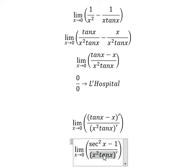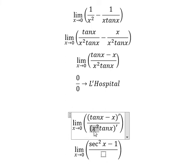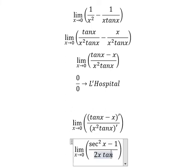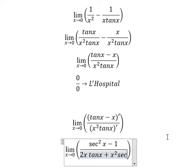This one we apply the product rule of the derivative. First derivative of x square we have two x. First derivative of tan x we have secant of x square.